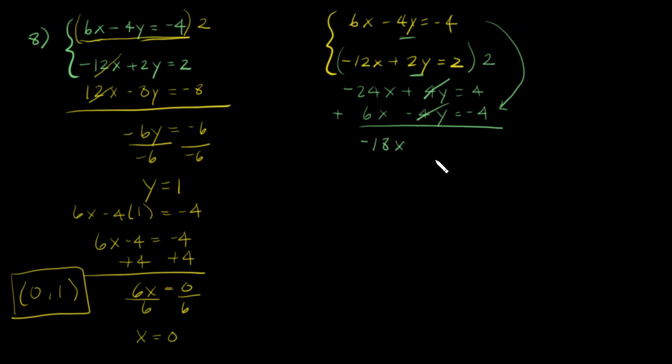And 4 - 4, which is going to give you a 0. Divide both sides by -18, so x = 0. And then when you put it into one of the equations, you're going to get the same y. Good job!